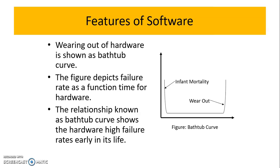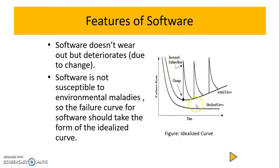Comparing this with software — as we know, software doesn't wear out. But basically, due to changes, its quality may get degraded. Here I am showing the idealized curve, wherein we think the failure rate is going to come down as we maintain quality. Because software is not susceptible to environmental maladies, it is not going to wear out like hardware. Due to undiscovered defects or errors, the failure rate may go high, resulting in software failure.